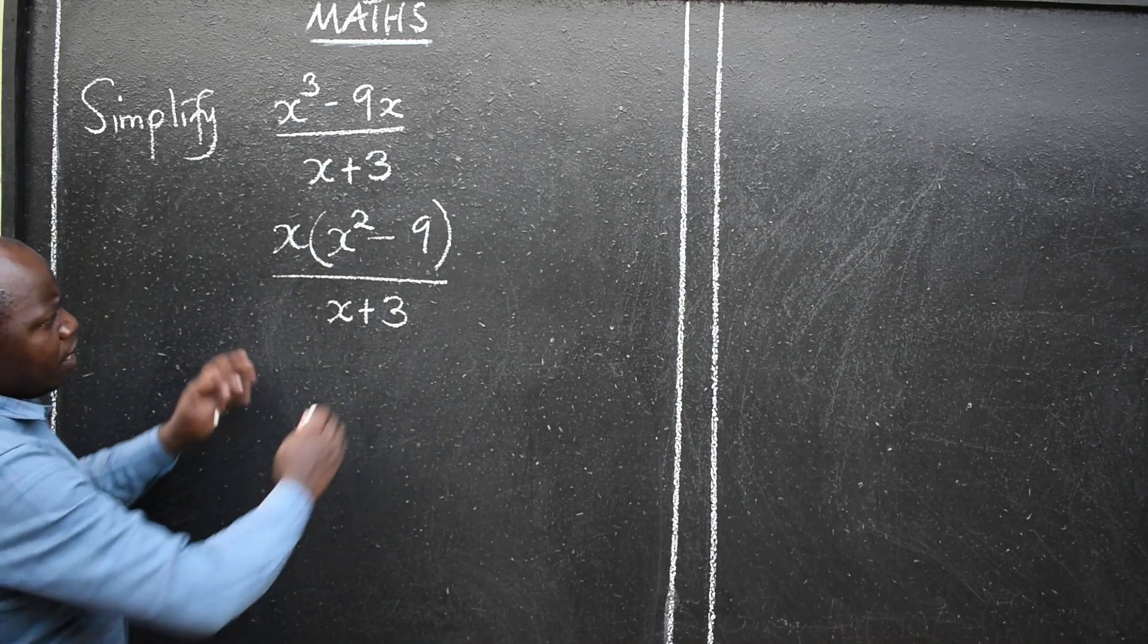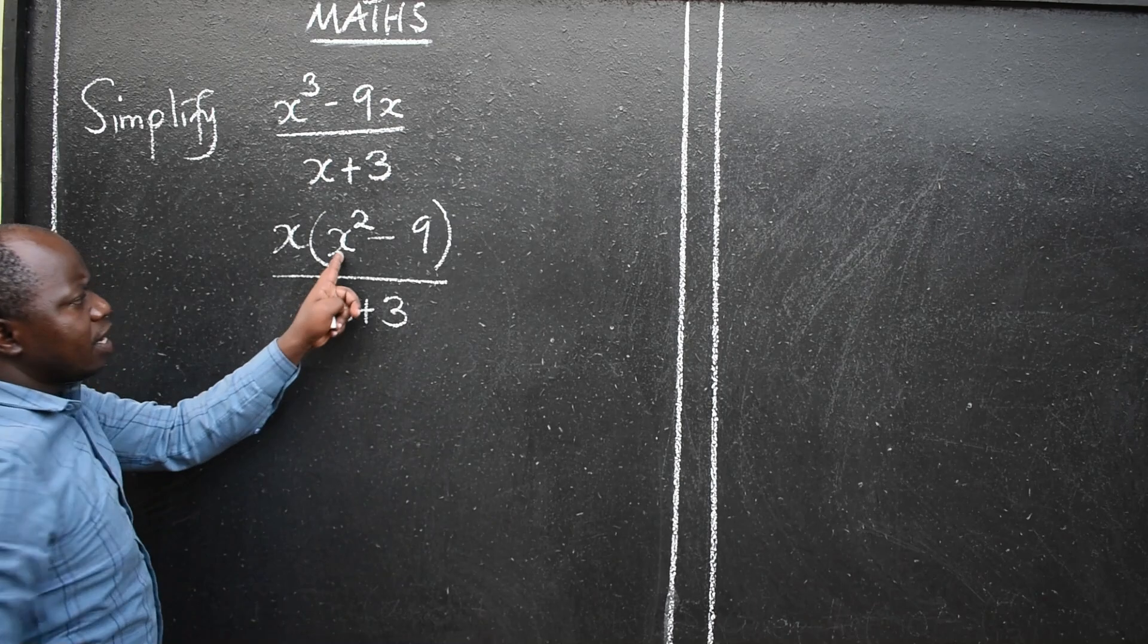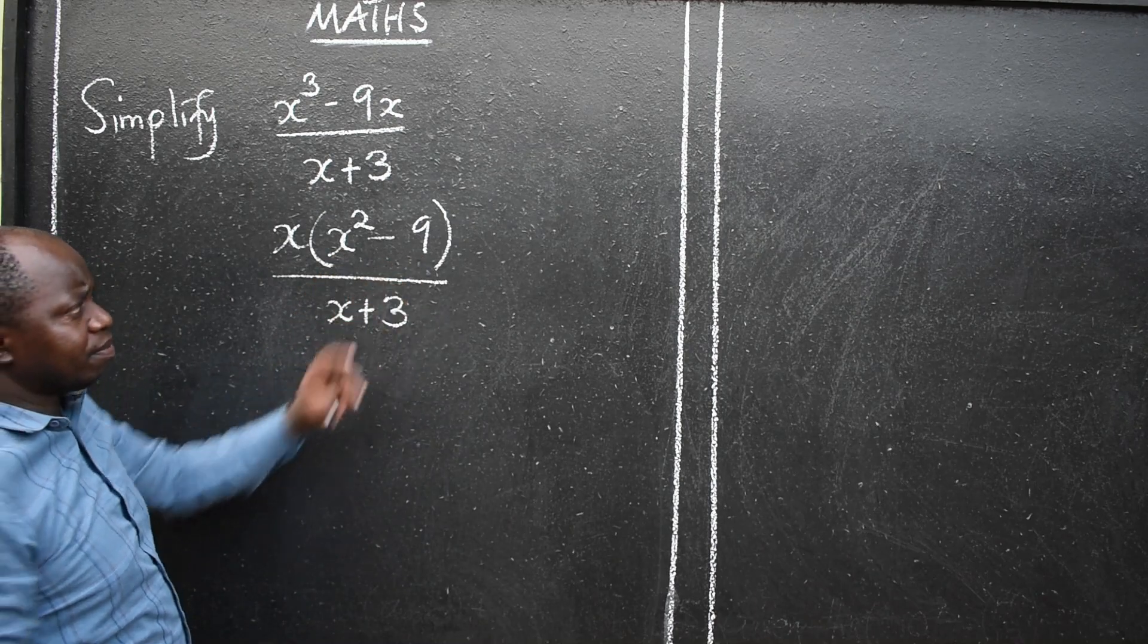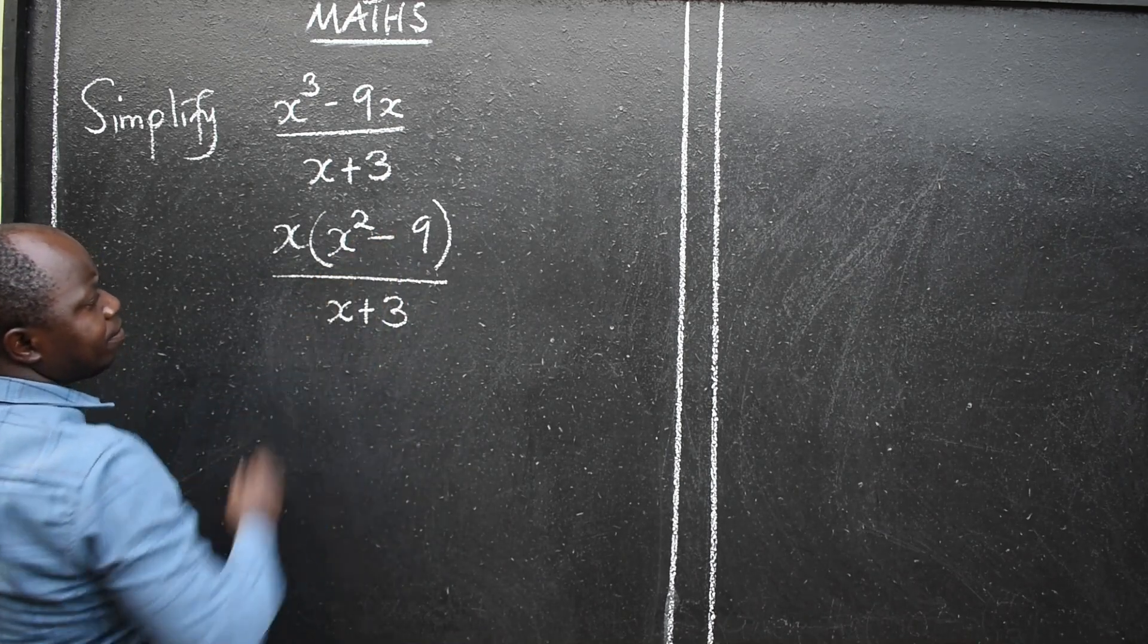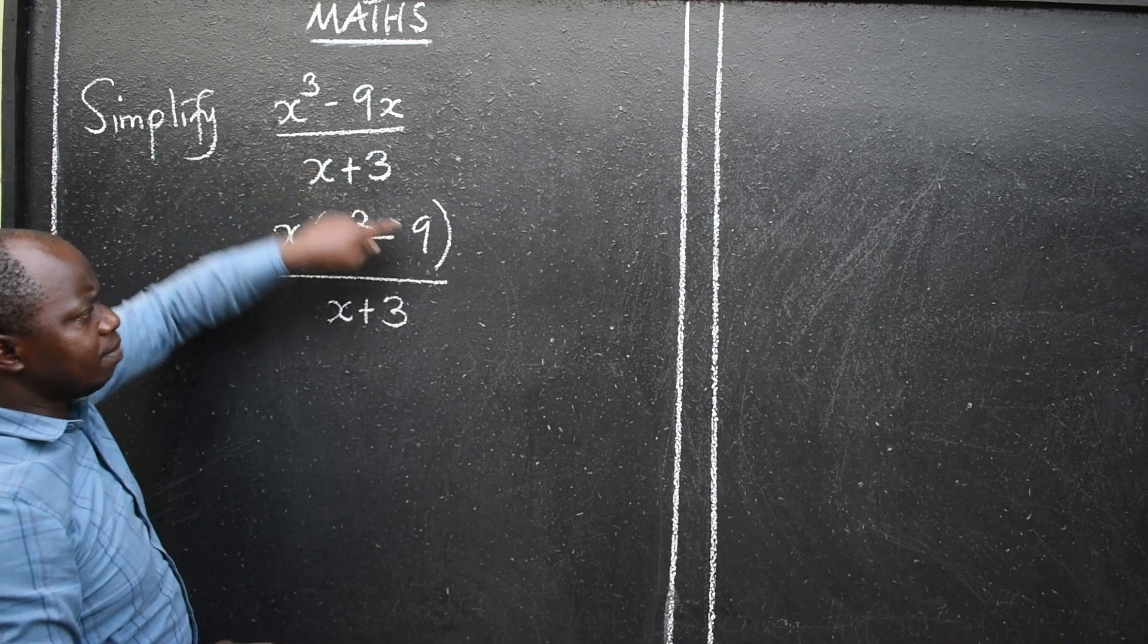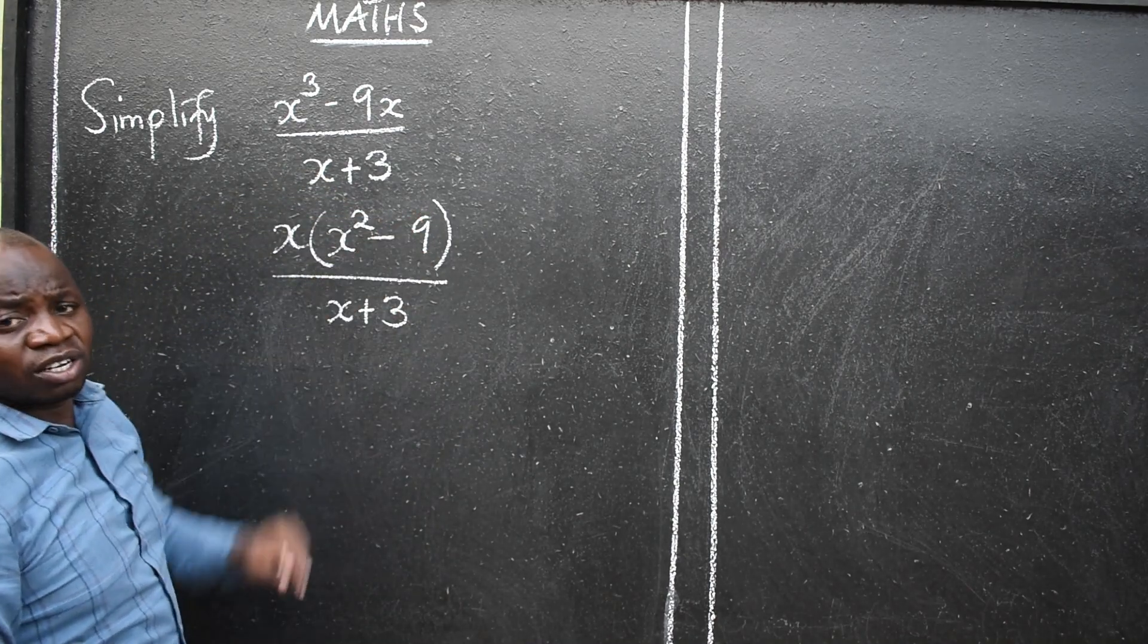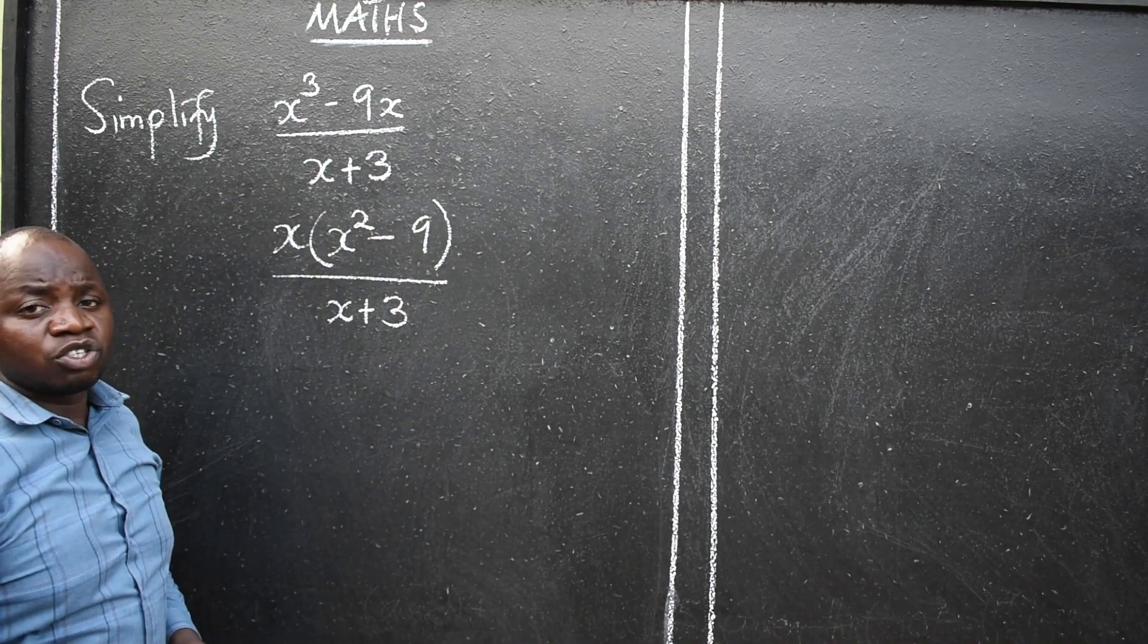Further, you can see that what I have inside here is a difference of two squares. There is a minus here. I have got x squared, meaning this 9 can be expressed in square form.